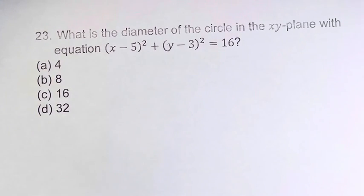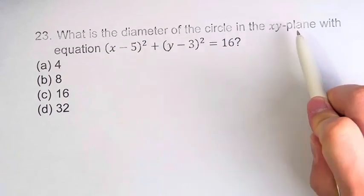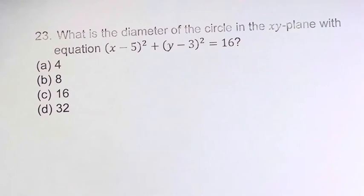Hello and welcome back to another video. In this problem we're asked what is the diameter of the circle in the xy-plane with equation x minus 5 squared plus y minus 3 squared is equal to 16.